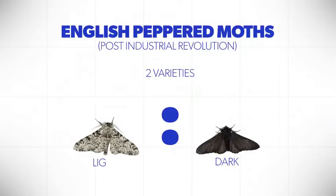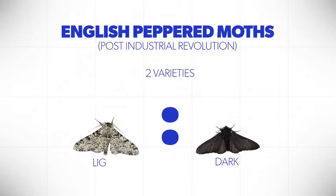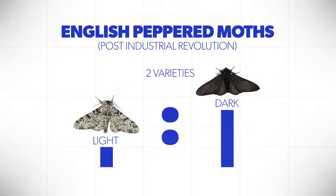But after the Industrial Revolution, the dark colored became the more prominent color and the light the fewer in the mix. And we're told that's because birds could see the light colored better, and this was supposedly an example of natural selection.